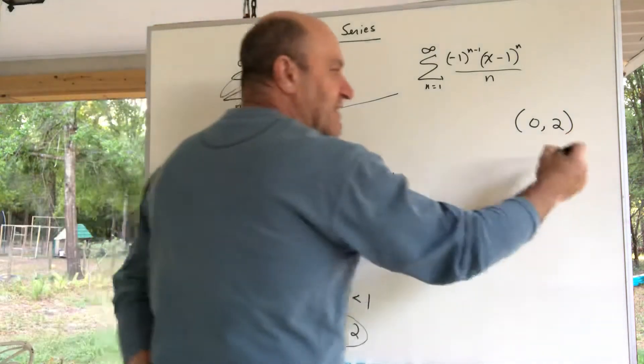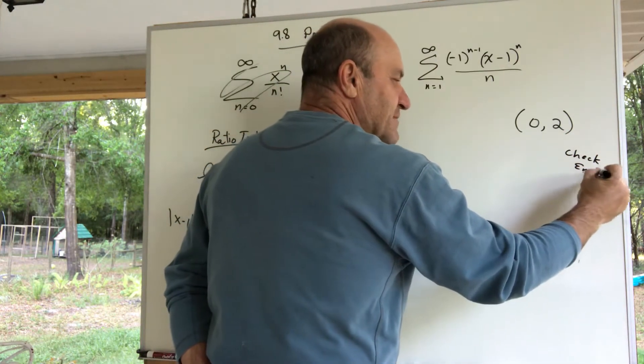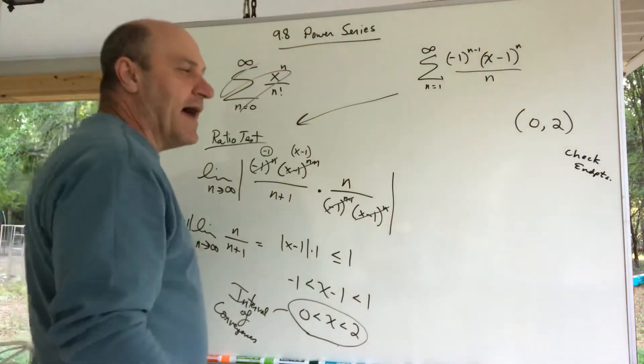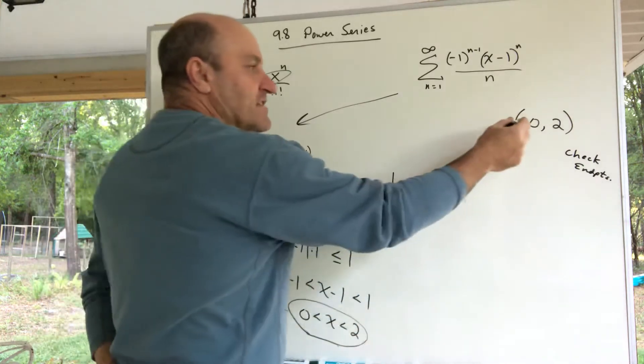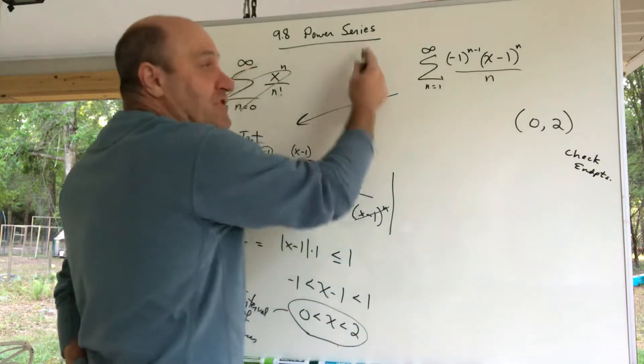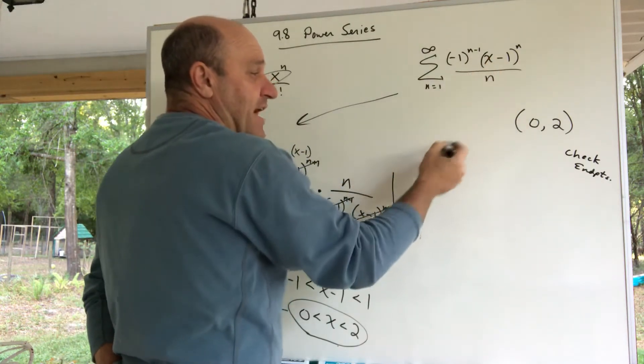You're supposed to check these endpoints. Now I'm not a huge fan of this—this takes the problem and makes it a little more tedious. But you plug in a 0 for x, and then you're no longer a power series with a variable x. When you plug in a 0 for x, you're now this series.